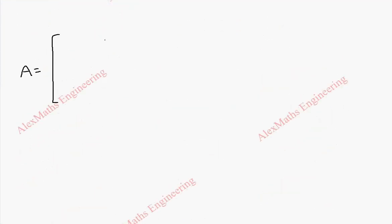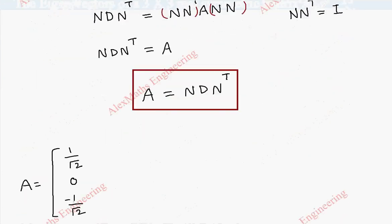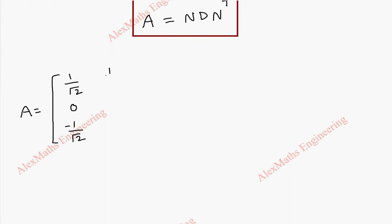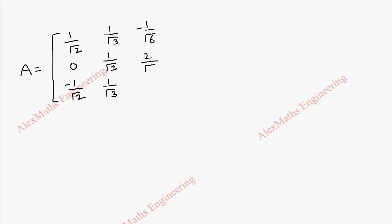So, we are going to divide entire column elements by these magnitudes and form the normalized matrix N. The first column gives 1 by root 2, 0 by root 2, minus 1 by root 2 — so 0 becomes 0, giving entries 1, 0, minus 1 divided by root 2. The second column: 1 by root 3, 1 by root 3, 1 by root 3. The last column is minus 1, 2, minus 1, so we get minus 1 by root 6, 2 by root 6, minus 1 by root 6. So, we have formed the normalized matrix N.